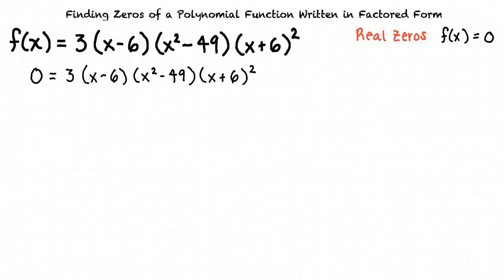How does this help us find the real zeros of this function? Knowing this, we can set each factor equal to 0 and solve for x. If we find an x value that makes one of our factors equal 0, then the whole function will equal 0, and we found what we call a zero of our function.